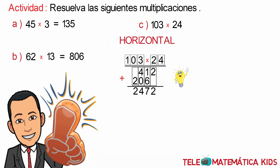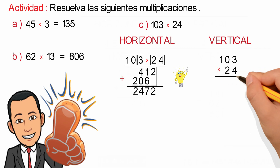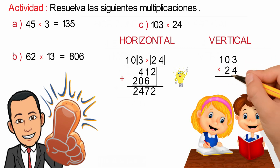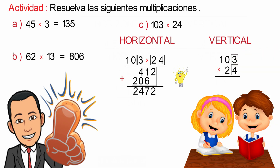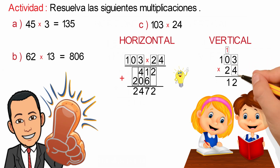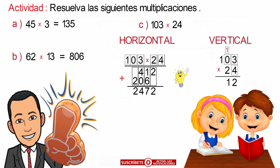Now, the vertical option: we write the operation vertically and solve in a similar way. Starting with the multiplication of 4 by 3, corresponding to the unit, giving us 12; we write the 2 and carry 1, placing it above the 0. We repeat the procedure: 4 by 0 gives us 0 plus 1 carried equals 1. Then 4 by 1, corresponding to the hundreds, gives us 4.